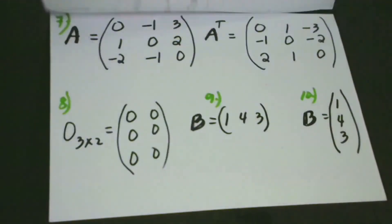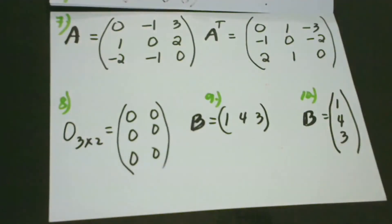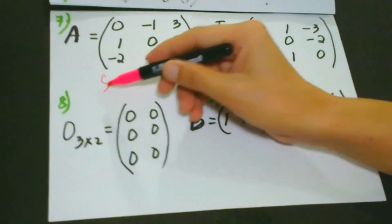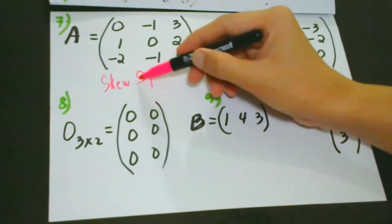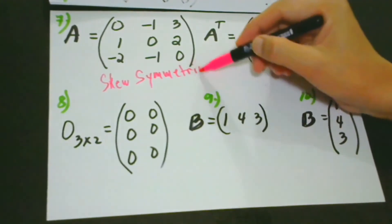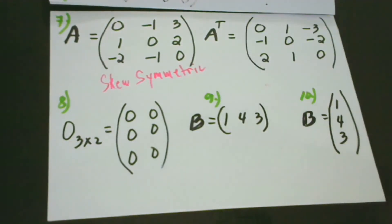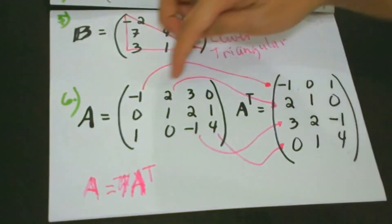What about a skew symmetric matrix? What about the skew symmetric matrix? This is the matrix in number seven. Skew symmetric matrix.